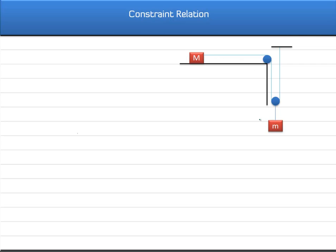If these are the two blocks which are connected as shown, let us call this block A and this block B. Let us assume that this block is accelerating in the down direction with an acceleration a1 and this is moving in the forward direction with an acceleration a2.